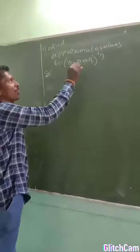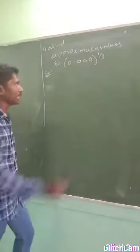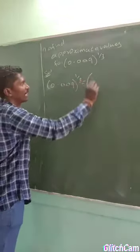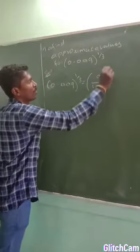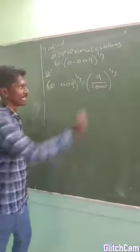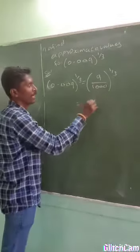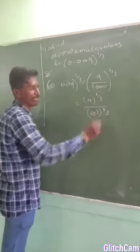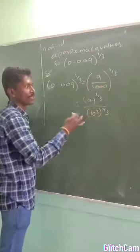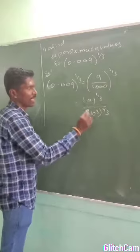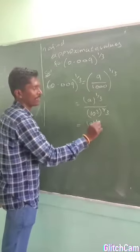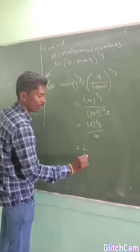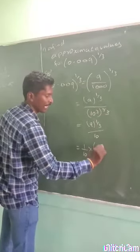We are going to find the approximate value of 0.009 raised to the power 1/3. We can write 0.009 as 9/1000, so (9/1000)^(1/3) becomes 9^(1/3) divided by 1000^(1/3). Since 1000 = 10^3, the exponent 1/3 cancels with the cube, giving us (1/10) · 9^(1/3).